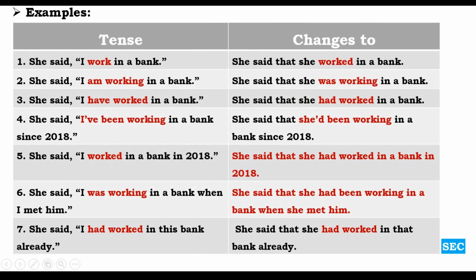Let us look at examples. 'She said, I work in a bank' — present simple — becomes 'She said that she worked in a bank.' 'She said, I am working in a bank' — present continuous — becomes 'She said that she was working in a bank.' 'She said, I have worked in a bank' — present perfect — becomes 'She said that she had worked in a bank.' 'Have worked' has become 'had worked.' 'She said, I have been working in a bank' — present perfect continuous — becomes 'She said that she had been working.' 'Have been' becomes 'had been.'